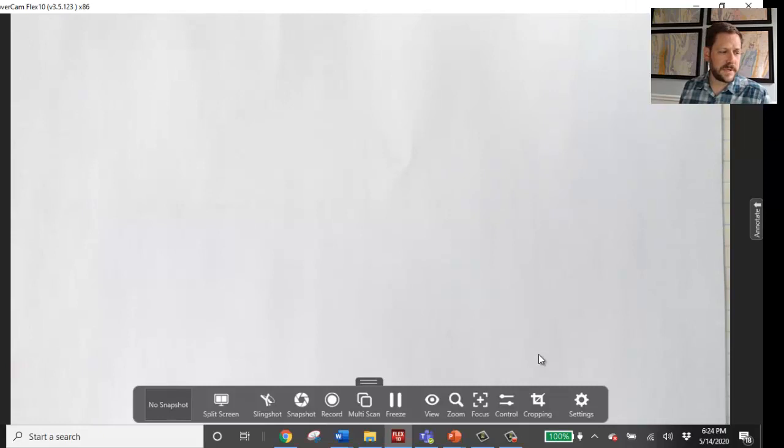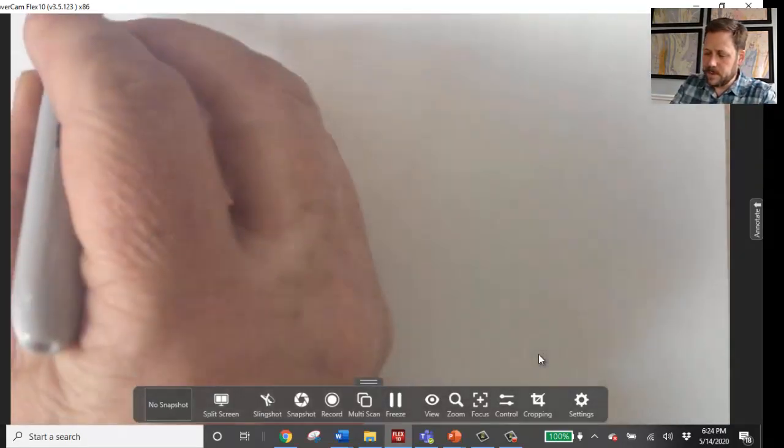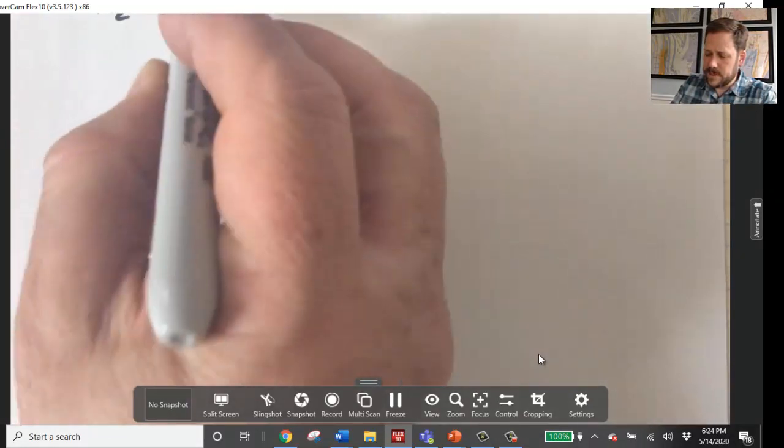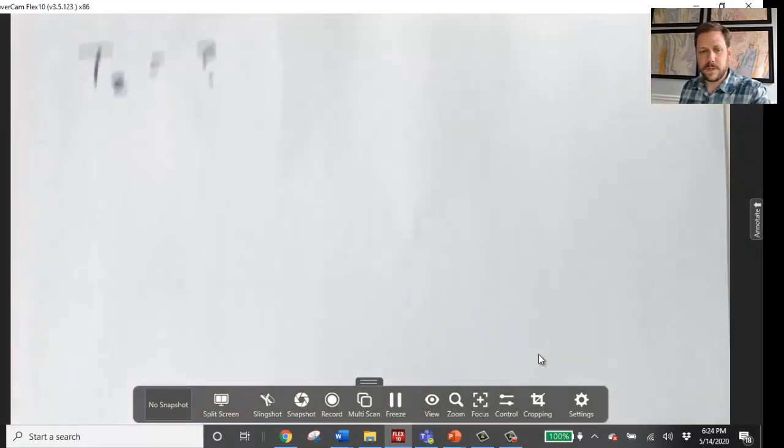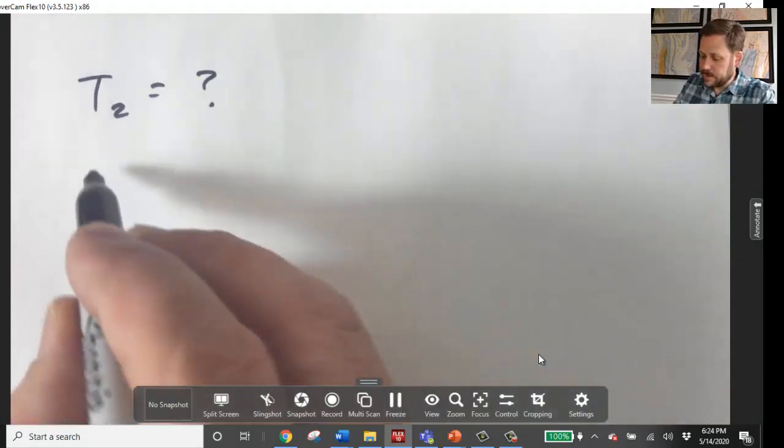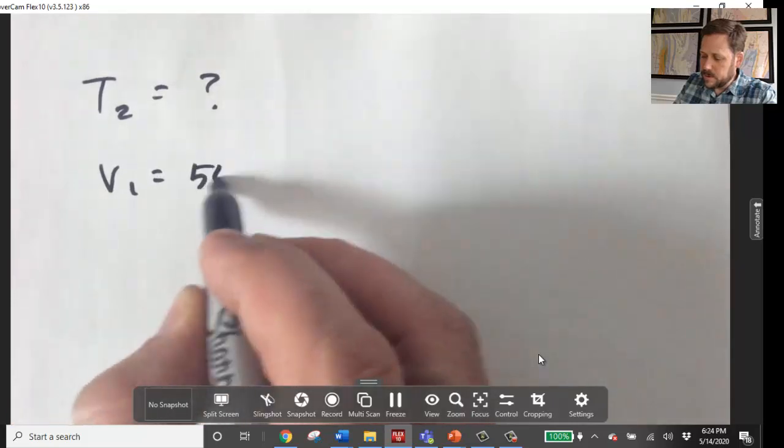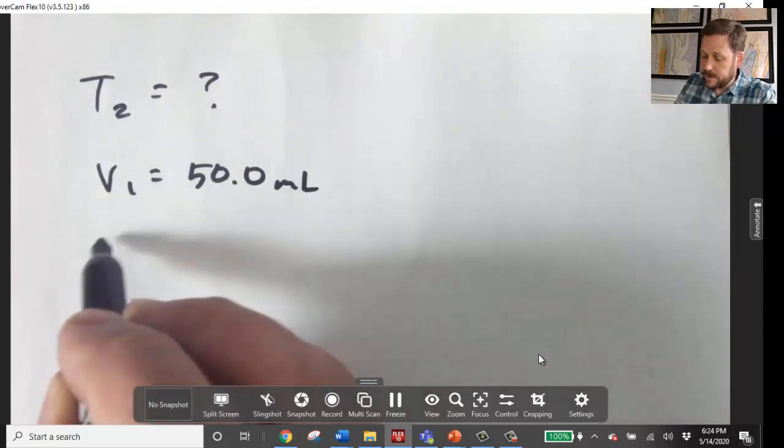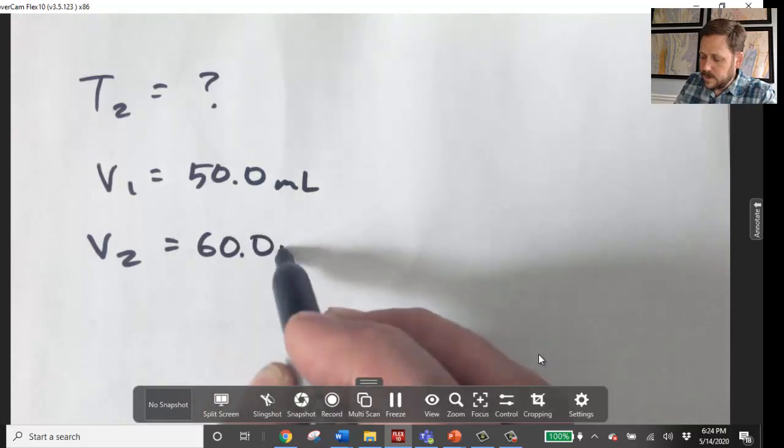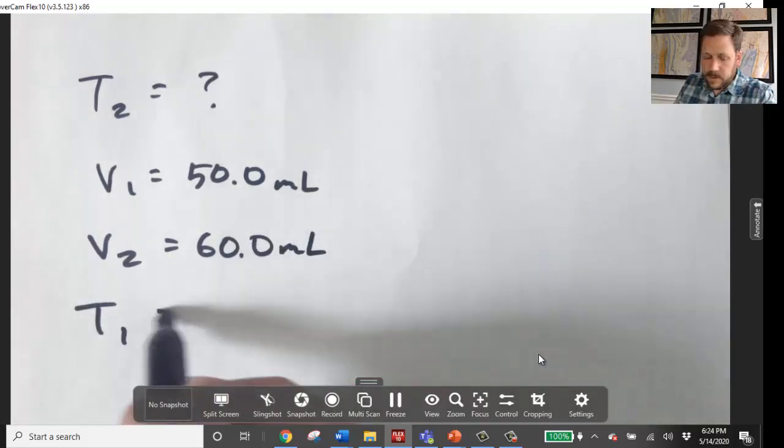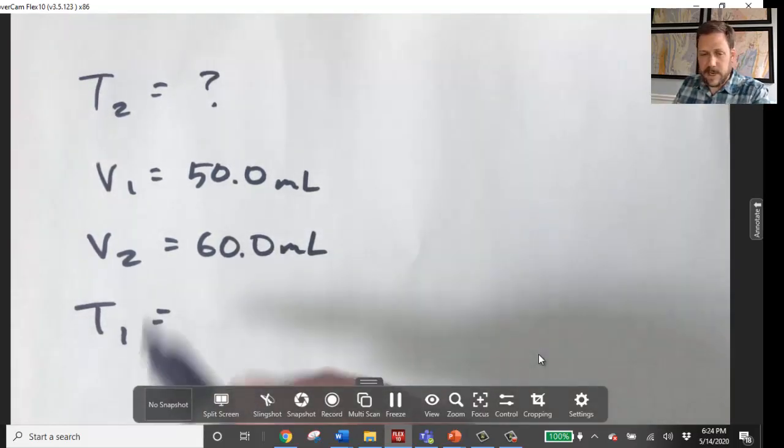All right. What temperature would cause 50 mils of air at STP to expand to a final volume of 60? So it's asking for a final temperature. What final temperature would cause a gas to expand from 50 mils, my initial volume, to 60 mils, my final volume? The initial temperature is important to know. It says at STP. And remember, STP means 273 Kelvin.